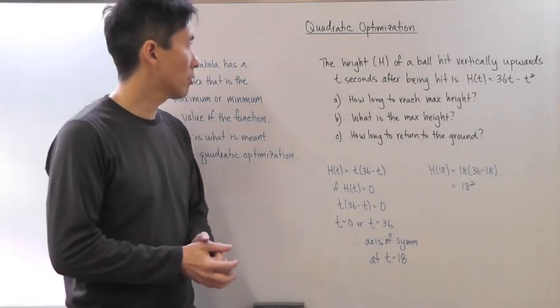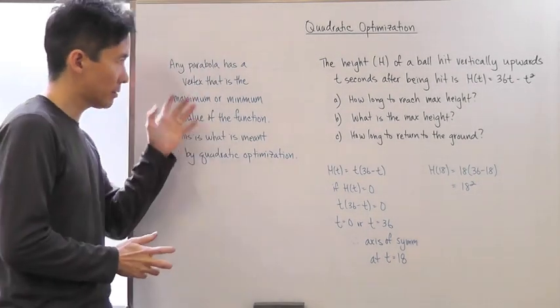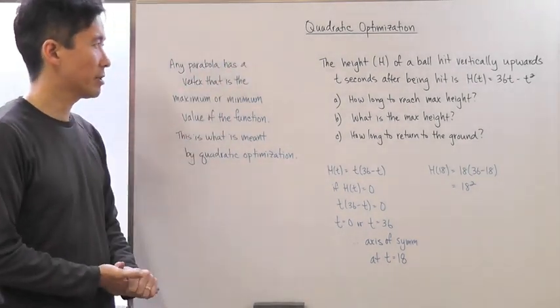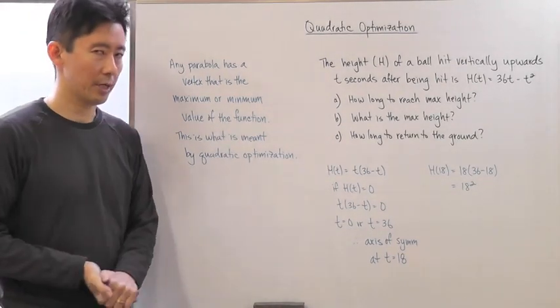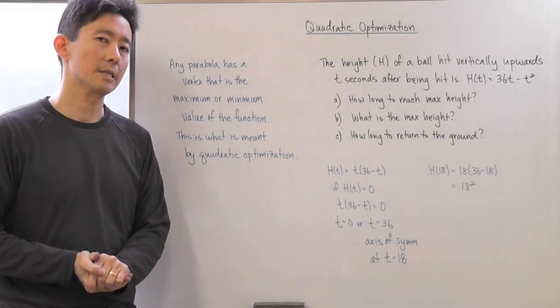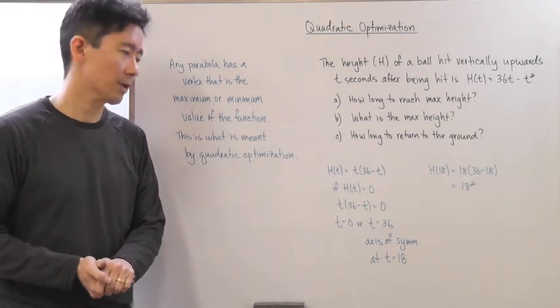Okay, let's take a look at what is called quadratic optimization. Any parabola you know of is going to have a vertex. The vertex is going to be either the maximum point of the curve or the minimum point of the curve.